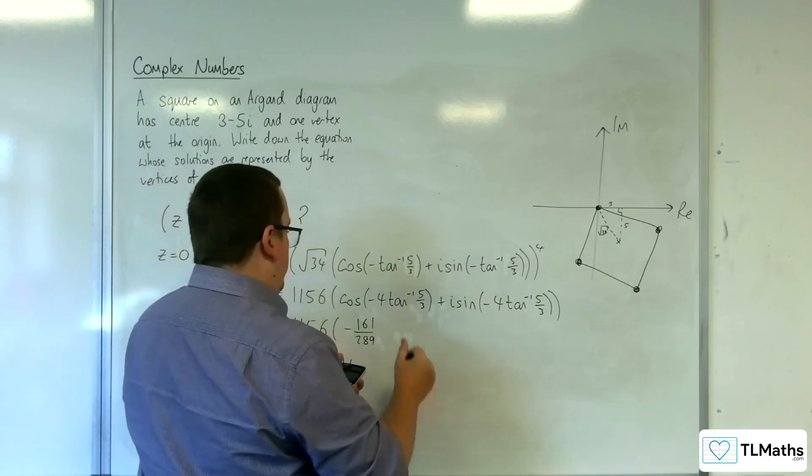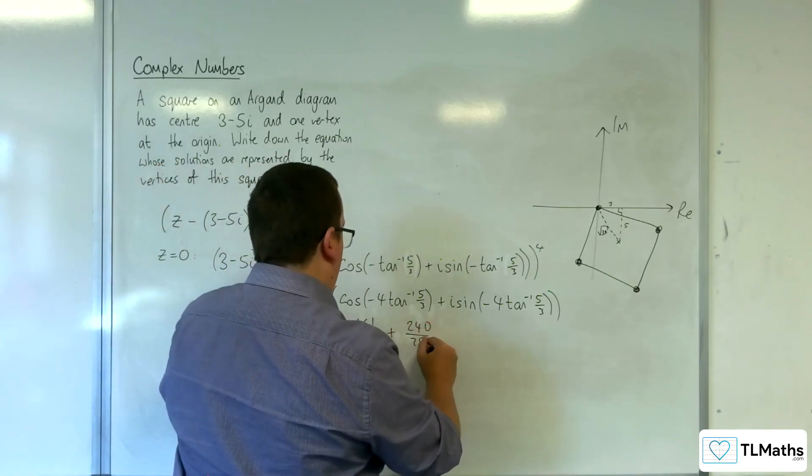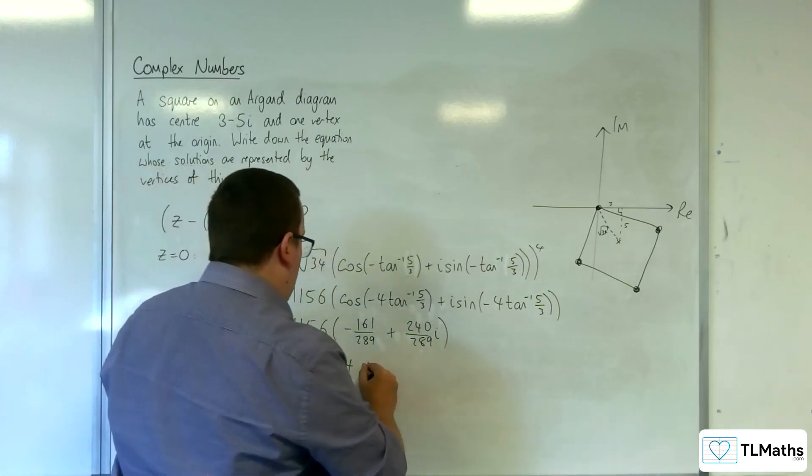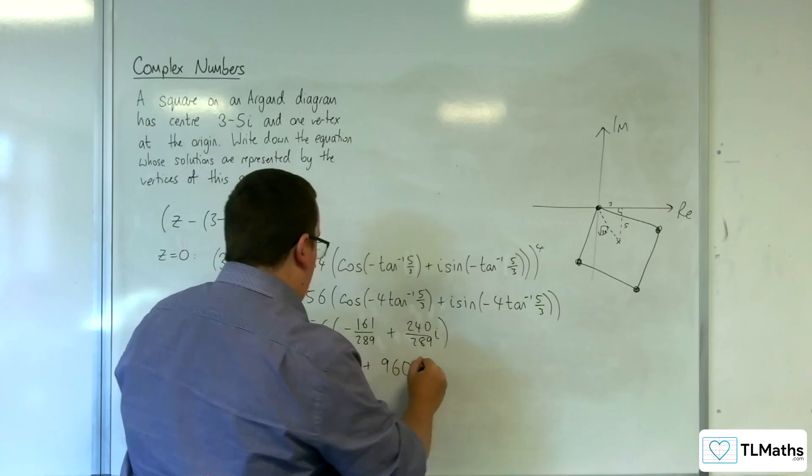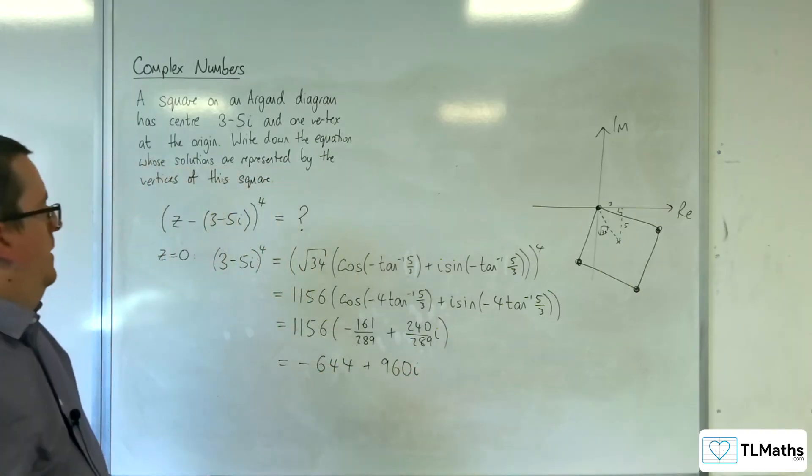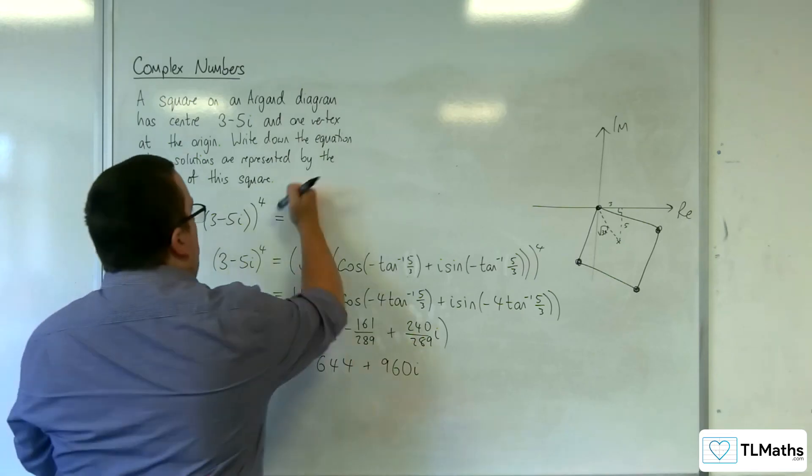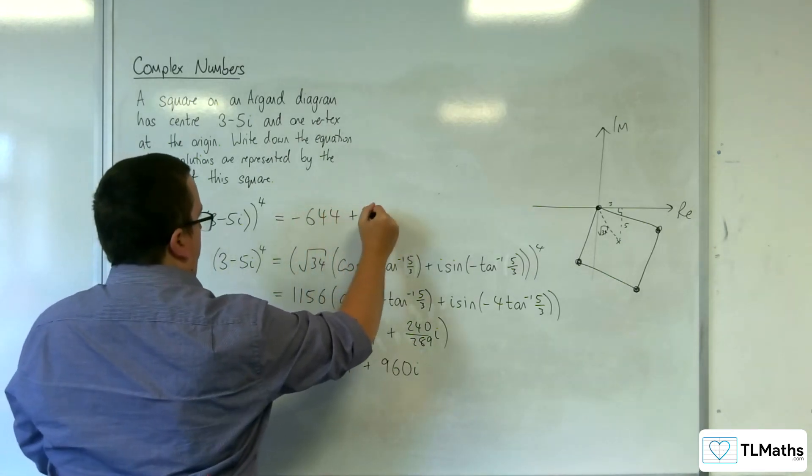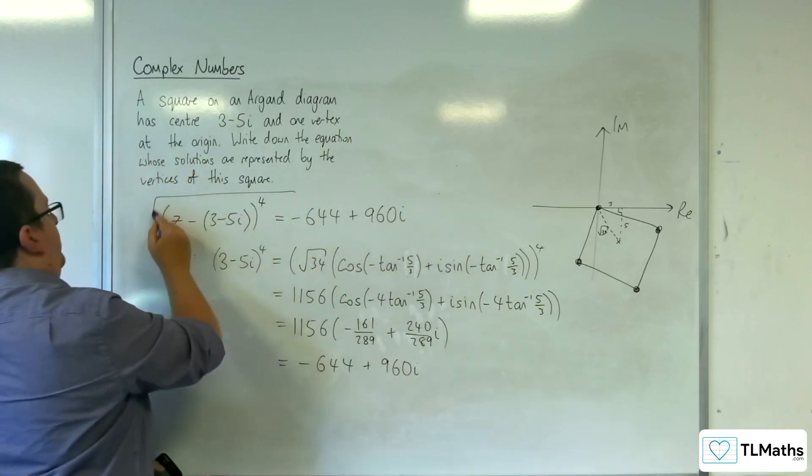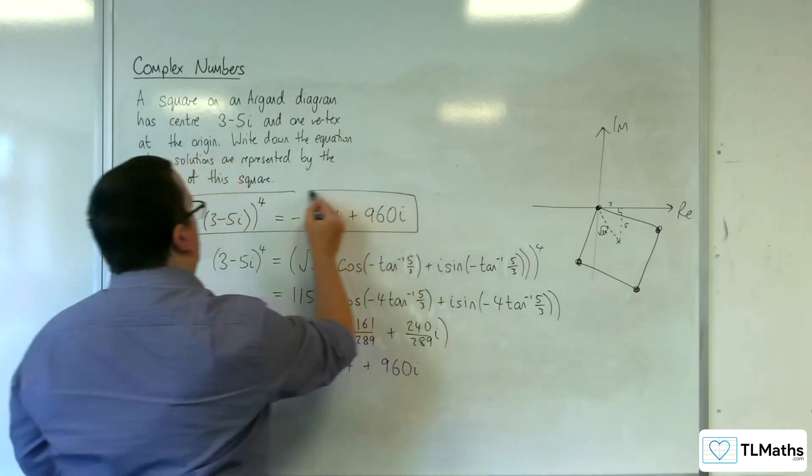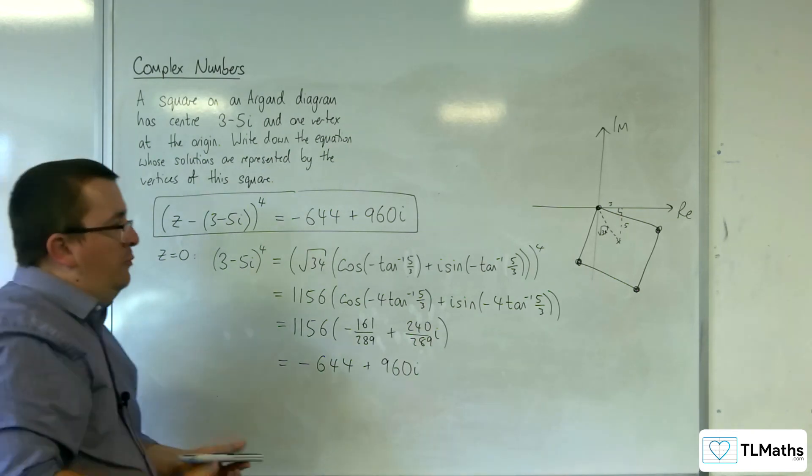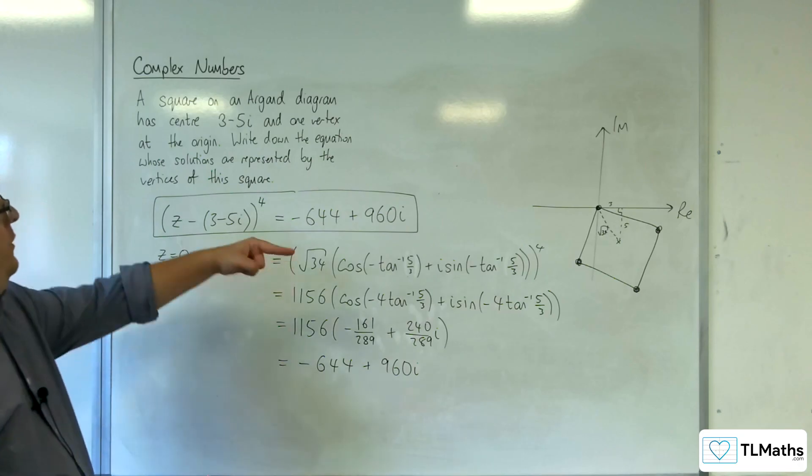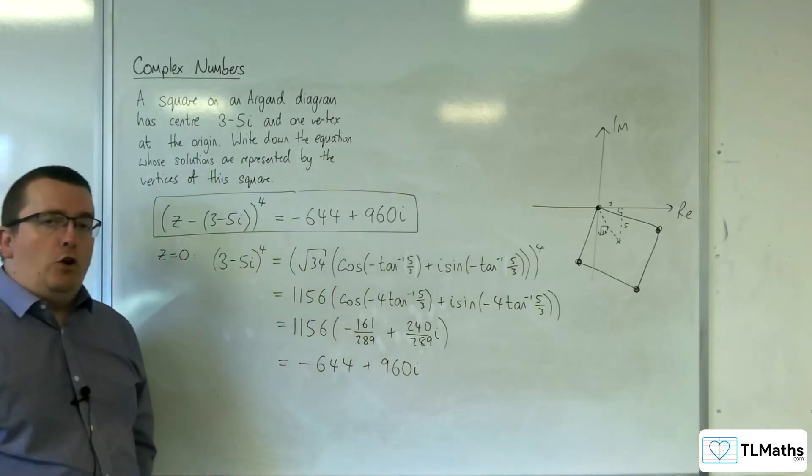That's 240/289, so +240/289i. Multiply that by 1156, and we get +960i. So that is my question mark. And so it is this equation where the solutions are represented by a square centered at 3 - 5i with one vertex at the origin.